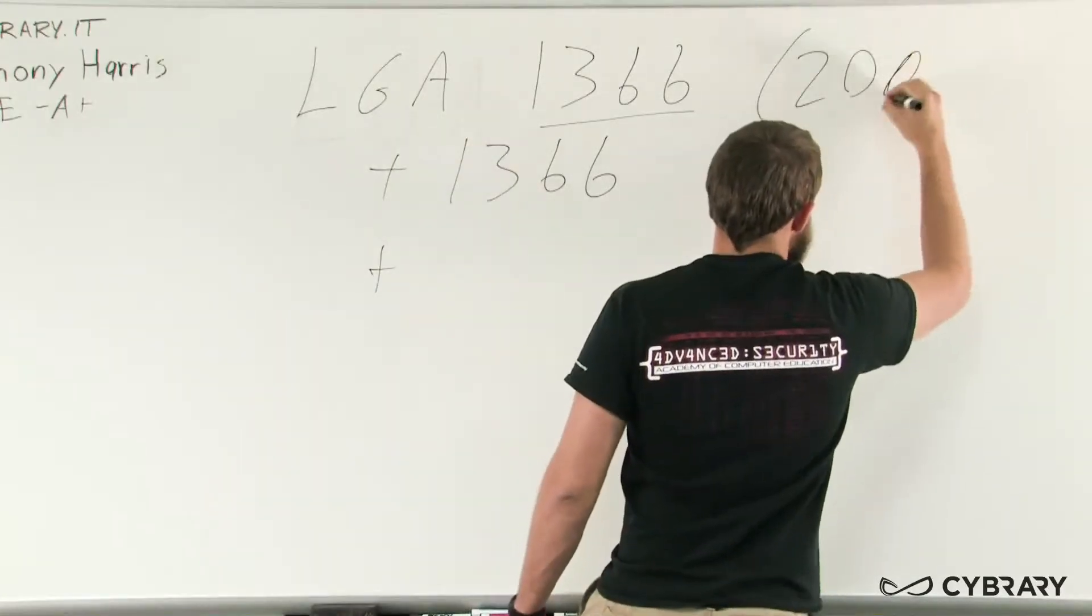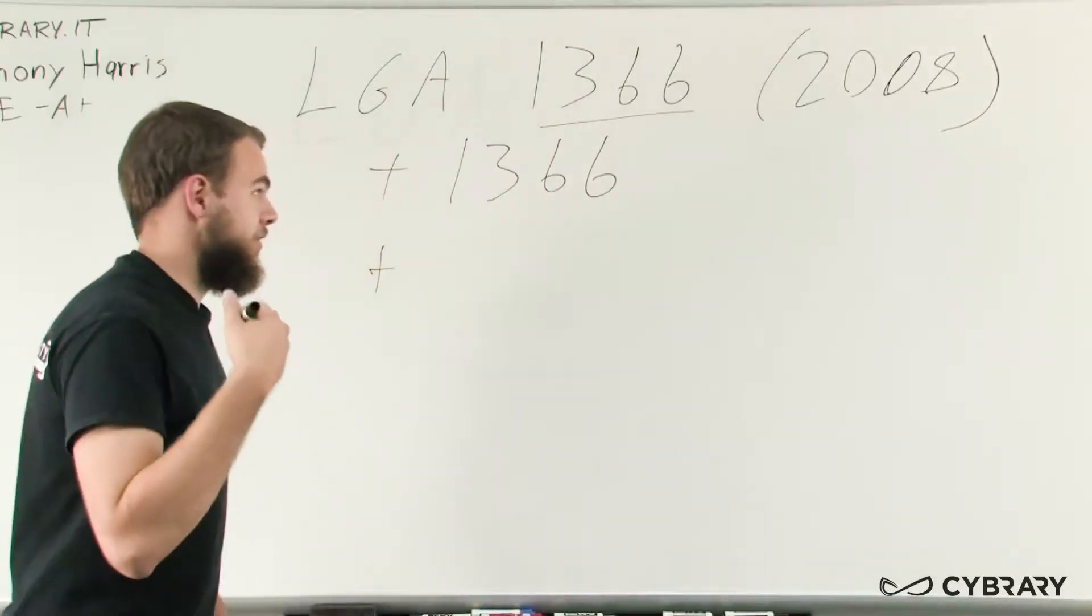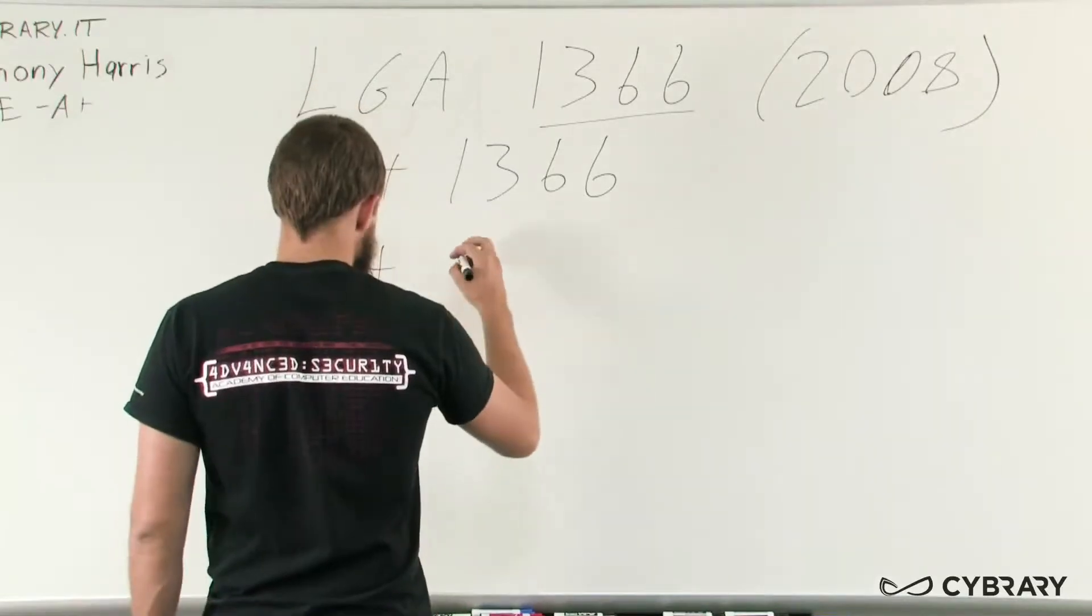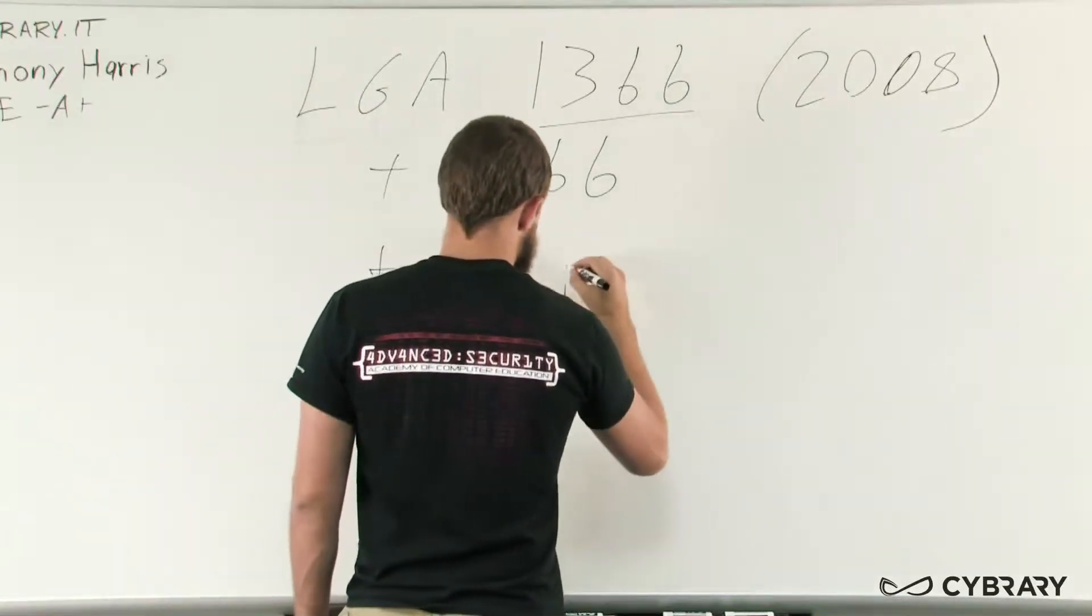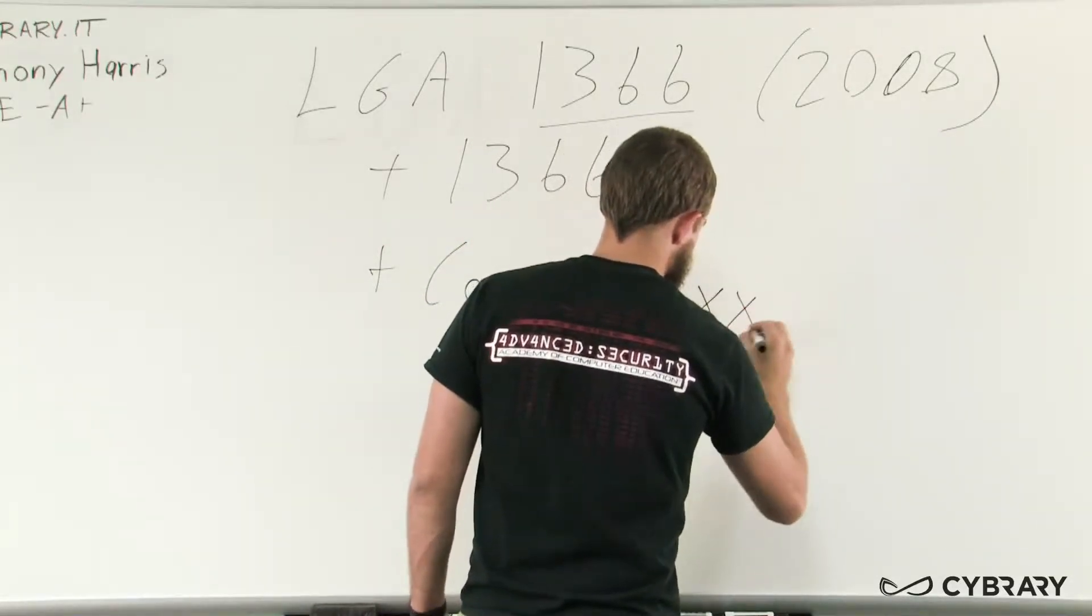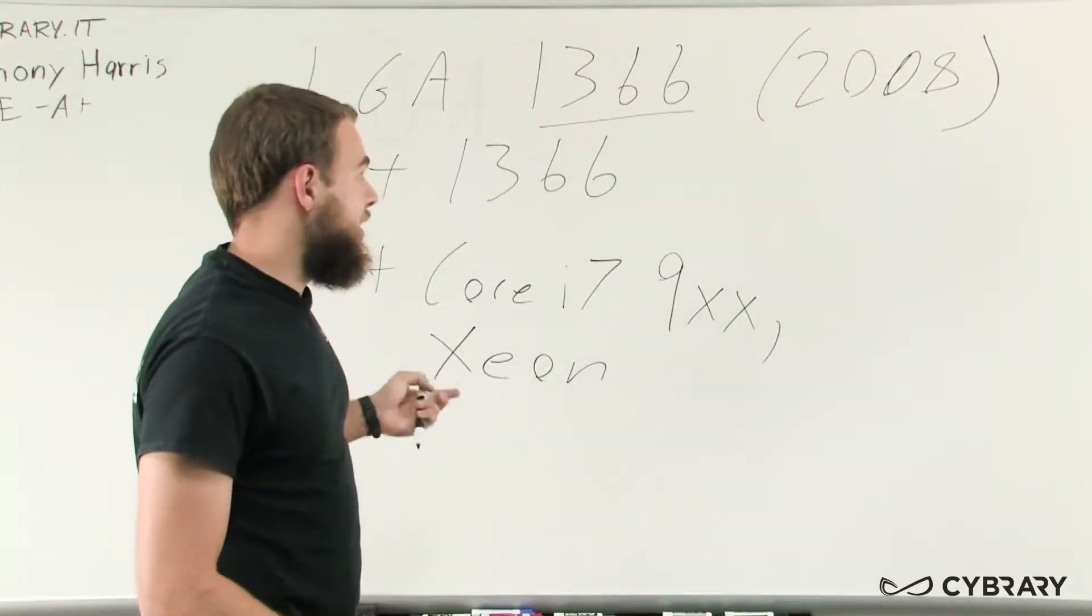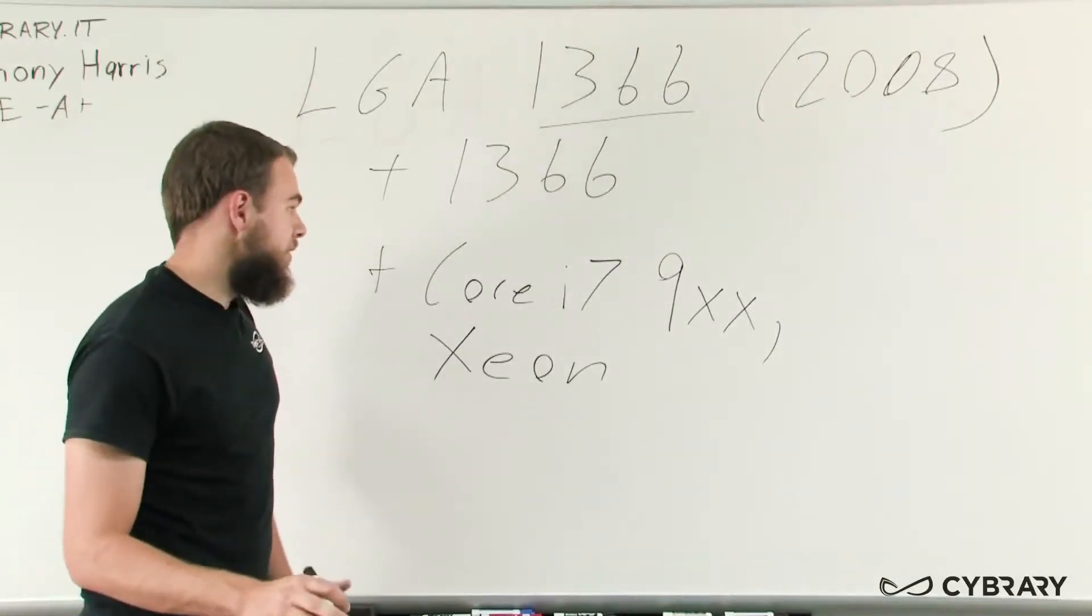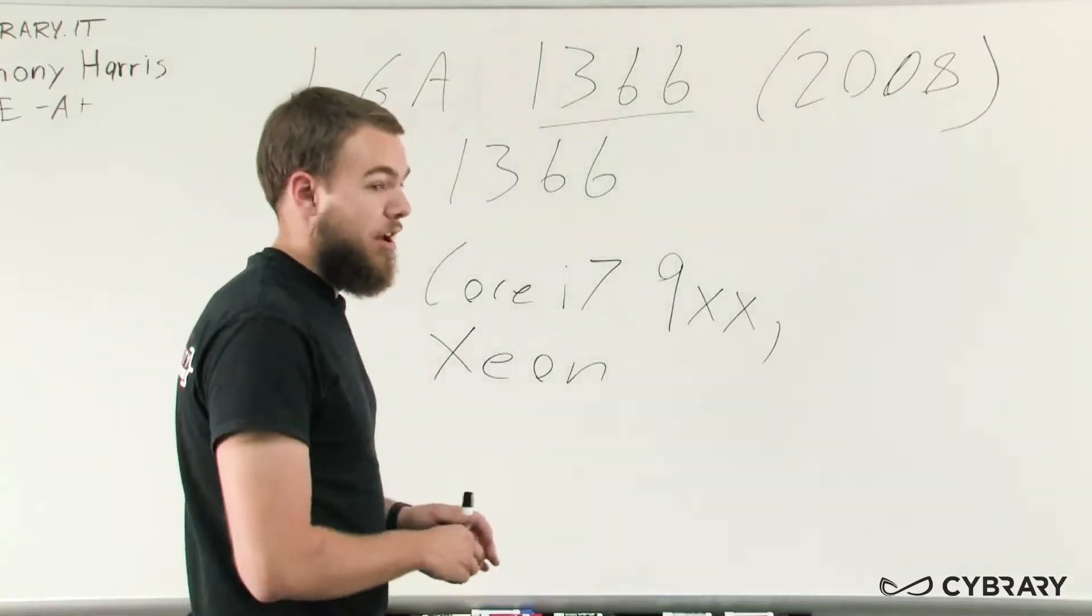This socket was released around 2008 and obviously came after the LGA-775. Certain types of processors that we'll see using this socket could include the Core i7-900 series as well as some of our Xeon processors. So as we can see our LGA-1366 about 2008, 1366 pins and certain processors such as our Core i7-900 series and our Xeon.